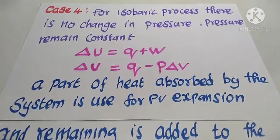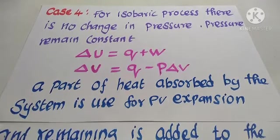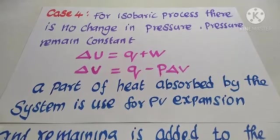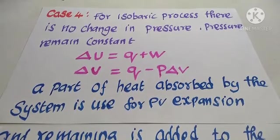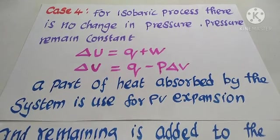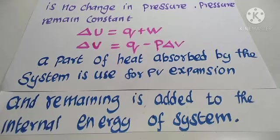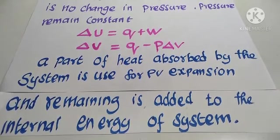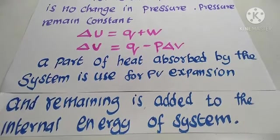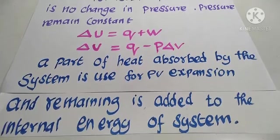Case four: for an isobaric process, pressure remains constant during the change from initial state to final state. Applying the first law, delta U equals Q plus W, and substituting work done as P delta V gives delta U equals Q minus P delta V. During the isobaric process, part of the heat energy absorbed by the system is used for pressure-volume expansion, and the remaining is added to the internal energy of the system.